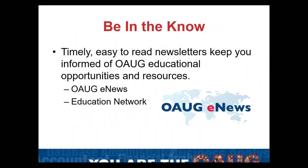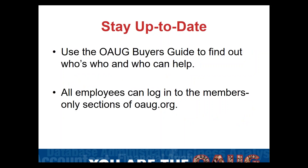We also have newsletters that keep you up to date on what's happening, what educational opportunities are available with OAUG, and what resources might be available to you. We also have, coming out in the fall, the OAUG Buyer's Guide. We produce that once a year — it is packaged with the fall edition of OAUG Insight magazine and is also available online. The Buyer's Guide is a searchable directory of different service providers and consultants. So if you're looking for a third party to come in and help you or get you started with something new, this is a great place to start.